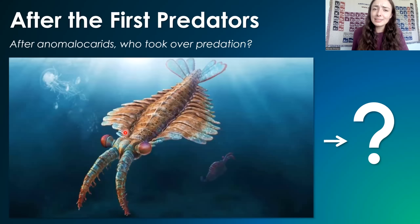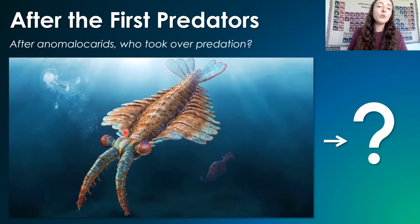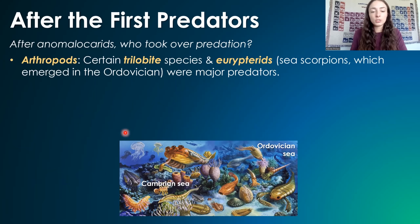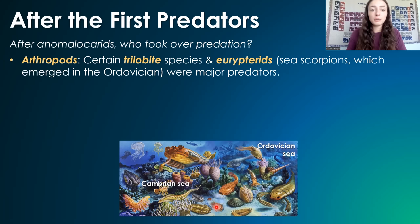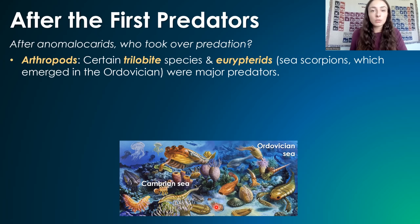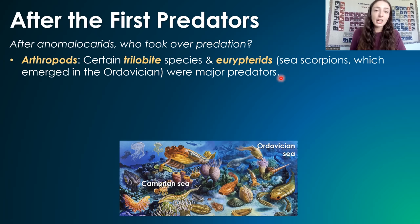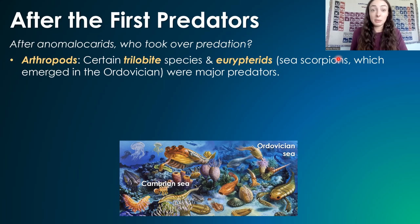So who became the apex predators after anomalocaridids went extinct? Arthropods like certain trilobite species were already preying on other organisms, and some species were getting bigger throughout the late Cambrian and Ordovician. Eurypterids also took over immediately after anomalocaridids went extinct — some of these sea scorpions got really huge, taller than the average human.